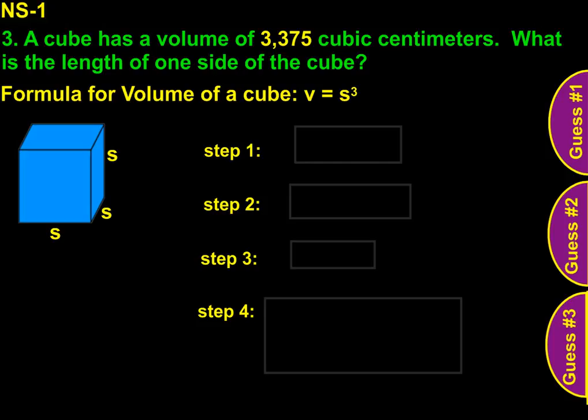And so we can set this up using the information that we were given. We know volume is 3,375, so we can substitute this for V. And we have S cubed equals 3,375.